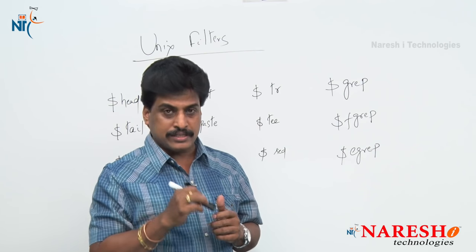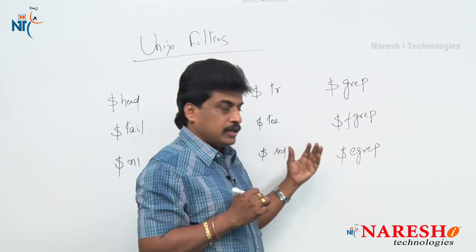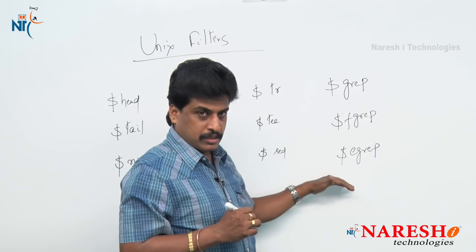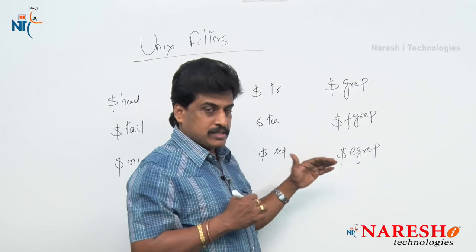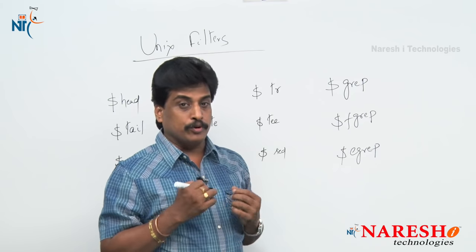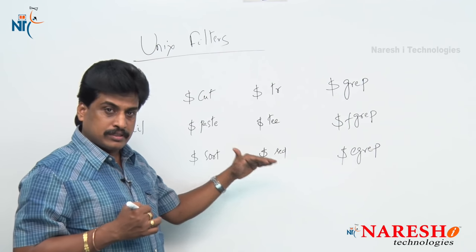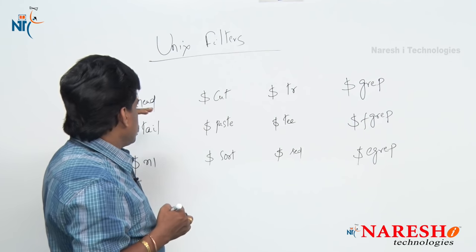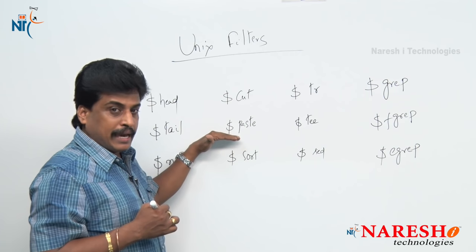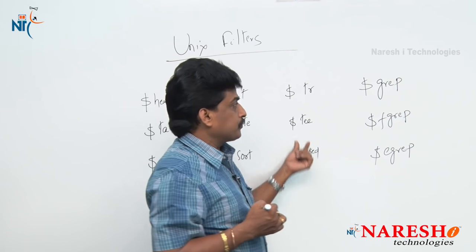SED is a stream editor — it works completely based on text-related operations. Grep stands for globally search for regular expressions. These three filters — SED, grep, fgrep, egrep — are mainly searching filters. In this video session, I will concentrate more on the grep area because in every Unix-related interview, maximum questions come from grep. These are the reporting and searching filter types. Head and tail are line filters, NL is a number filter, cut and paste are merge filters, sort is a sorting filter, TR is a translate filter, and SED is a stream editor.